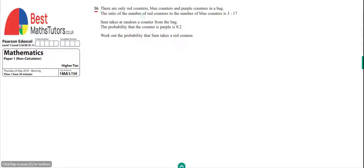We're given a question about ratios here. We've got a bag which has got red counters, blue counters, and purple counters. So I'm just going to draw that bag. We've got red, blue, and purple in the bag. It says that the ratio of red counters to blue counters is 3 to 17. I'm just going to write down that ratio, so we've got red to blue is 3 to 17. So that's the first bit of information we've looked at.